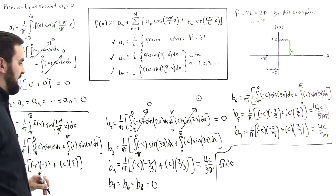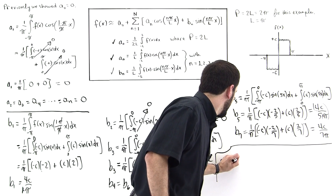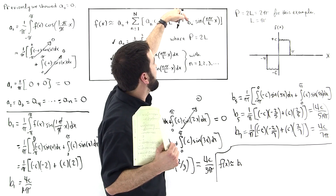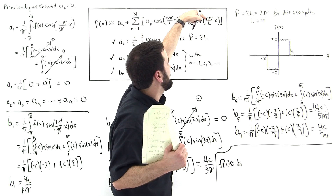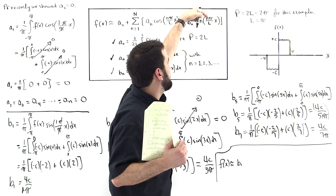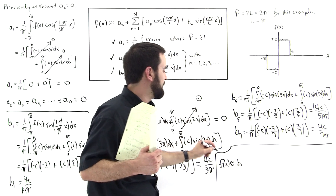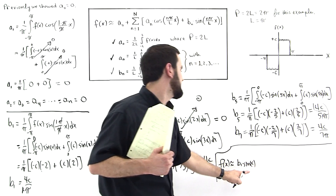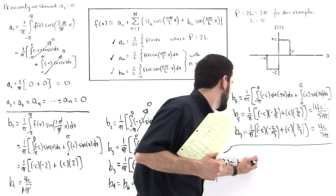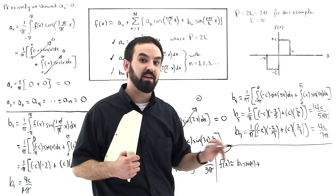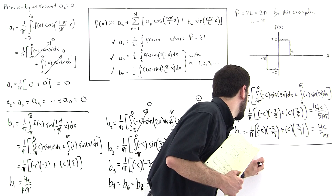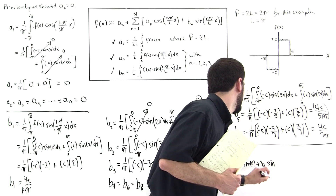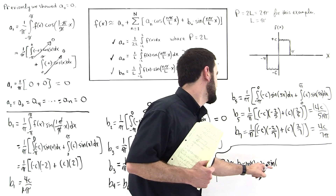b1 is 4c over pi. So b1 — let's just write it down — it's going to be b1 times the sine of nπx over L. So n is 1, pi is pi, and L is pi, so the pi's cancel. This is going to be b1 times the sine of x — that's the sine of 1x. Then this is plus b3 — all the even b's went away — times the sine of 3x.